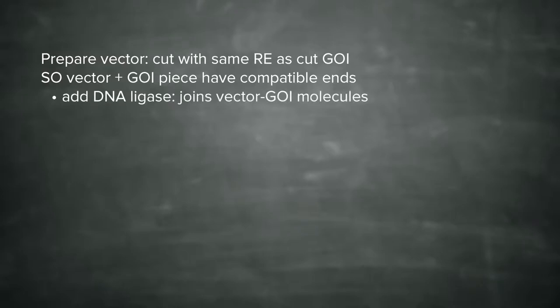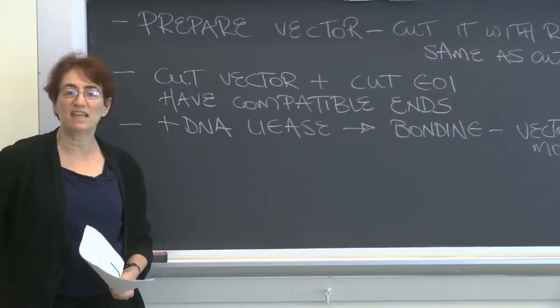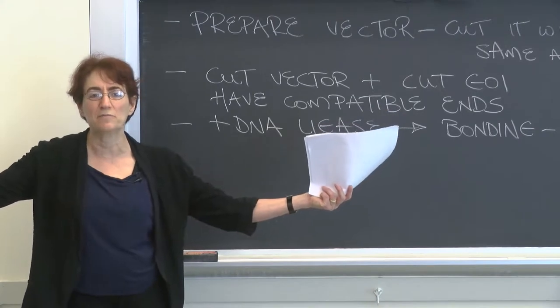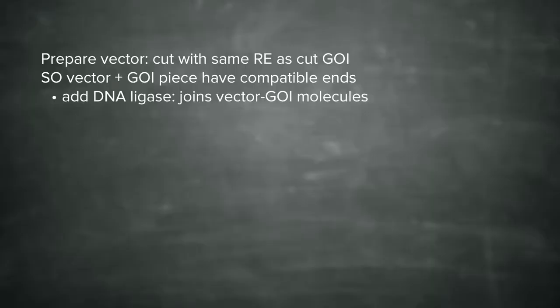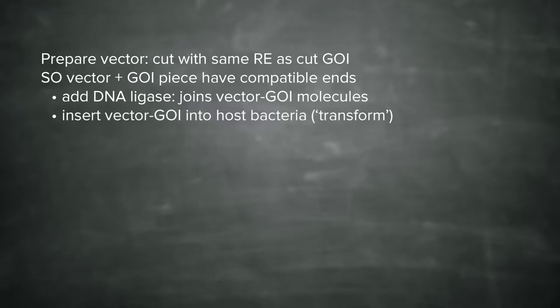You then mix together your cut vector and your cut gene of interest — they should have compatible ends at this point. It is your job as a genetic engineer to make sure that's true. You add DNA ligase to get bonding and produce a single vector plus gene of interest molecule. Usually there are millions and millions of molecules being processed. You take the whole mix and insert it into the host bacterium — the correct term for this is transform. You insert or transform the whole mix into host bacteria.